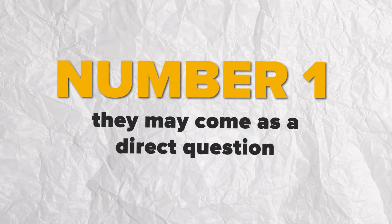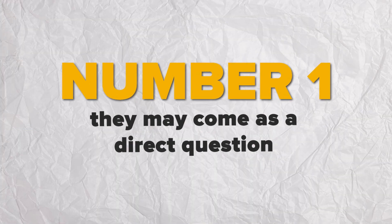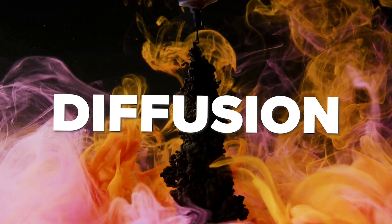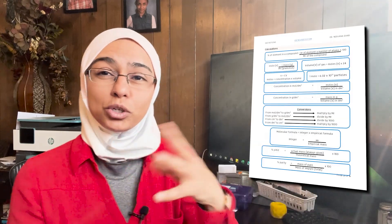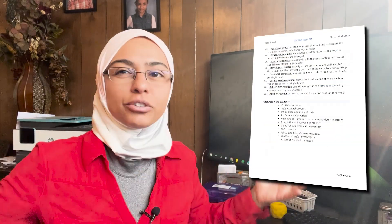These definitions come in two flavours. Number one: they may come as a direct question — for example, 'define diffusion' or 'define equilibrium' — where you just write the answer provided in the PDF. The second style is multiple choice, where they ask which of the following statements is correct and give you four answers. I'm going to review those 79 terms and tell you which ones are more likely to appear as a straightforward definition and which are more likely to come as a multiple choice question.